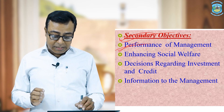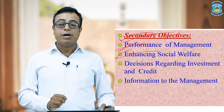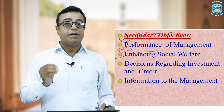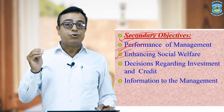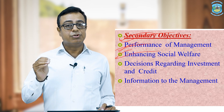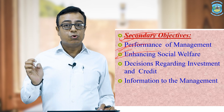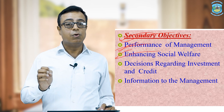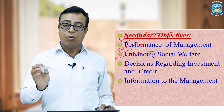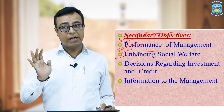The second secondary objective is enhancing social welfare. In corporate financial reporting, the company highlights its social work as well. This helps increase corporate social responsibility of the company, and helps the public know what social works and social welfare measures have been taken by the company.